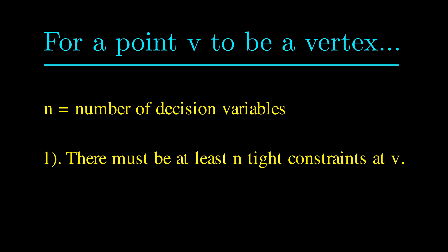The number of tight constraints at a vertex has to be at least the number of variables that we have. The second condition, that the point v has to be feasible still remains the same. The simplex method essentially jumps from vertex to vertex in each iteration and maintains these two conditions at all times. So it's important to remember these conditions because it's really important for the algorithm.